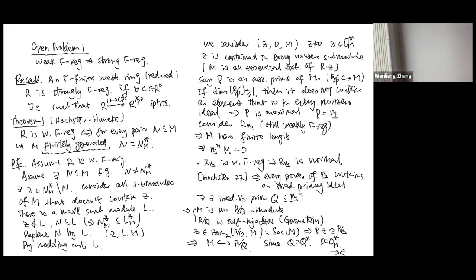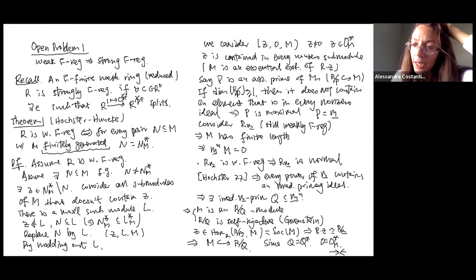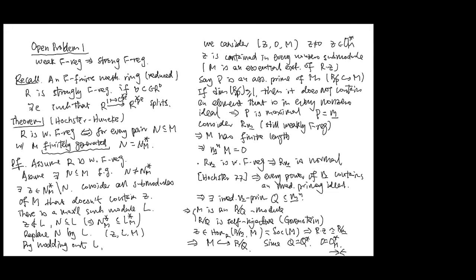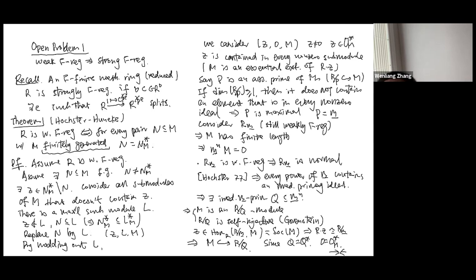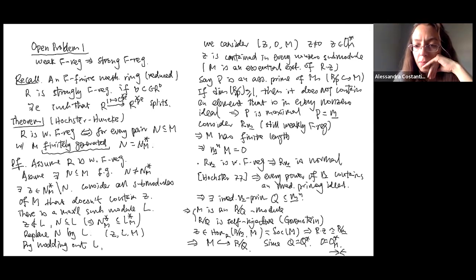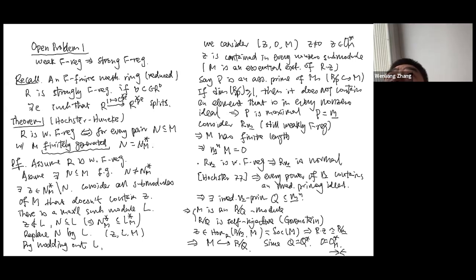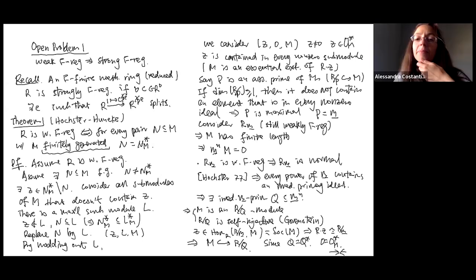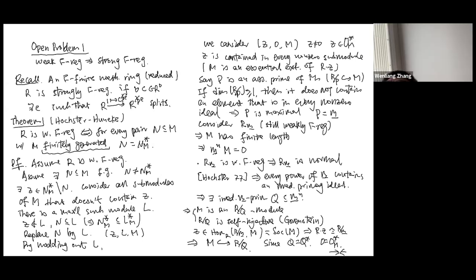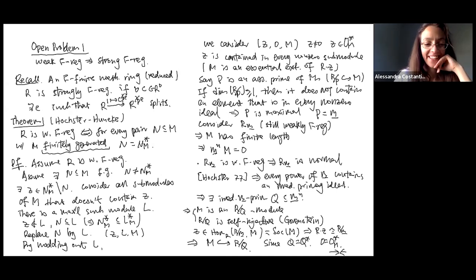Any question on this? — Yes, can you explain again why M has finite length? — It is finitely generated. If you have a finitely generated module, there is always a prime filtration, but the prime quotients can only be R/m because the maximal ideal is the only associated prime. That prime filtration actually gives you a composition series, which is finite.